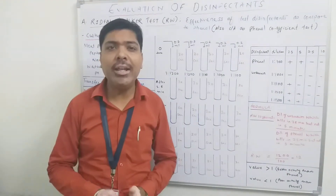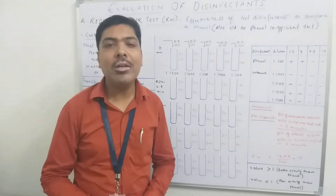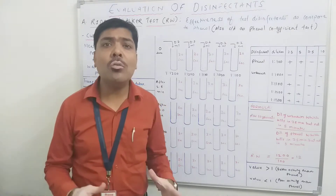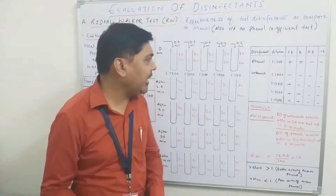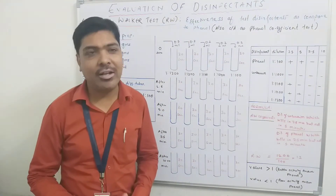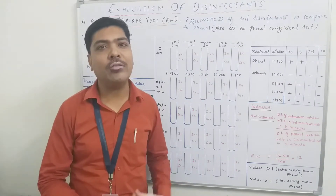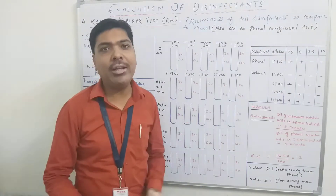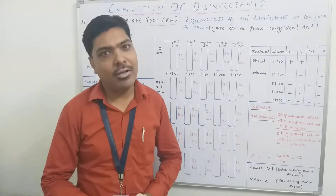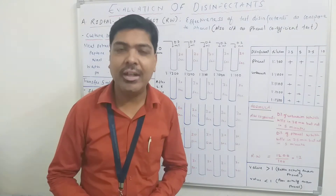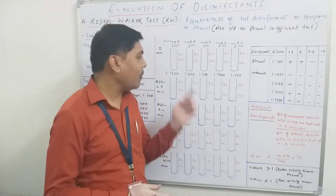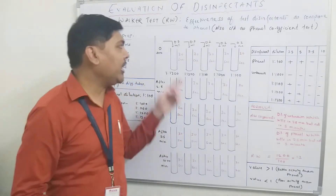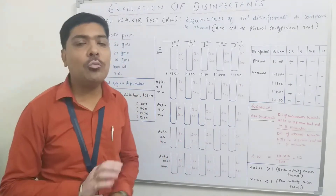When all these test tubes are ready with unknown dilutions and the phenol dilution, in the next step we take the culture of Salmonella Typhi, which is the standard culture used for the Riddeal-Walker test. We need to have an active Salmonella Typhi culture, and at time 0, we add 0.2 ml of this culture into the first tube that consists of the highest dilution of the test disinfectant. After inoculating the culture, we have to wait for 30 seconds.